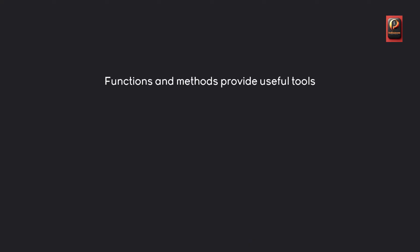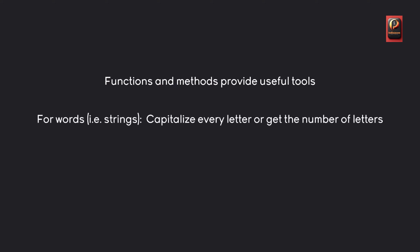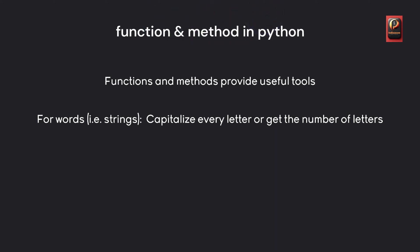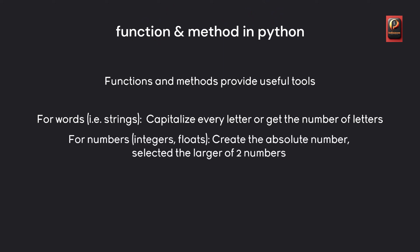Those two are very similar — both of them provide useful tools. For example, if you have words, i.e. a string, a function or a method would allow you to capitalize every letter or get the number of letters. If you have numbers, both integers and floats, you could create an absolute number or select the larger of two numbers.